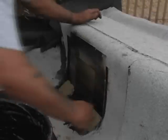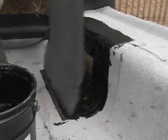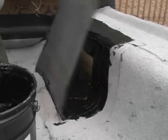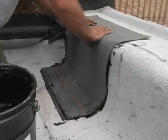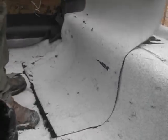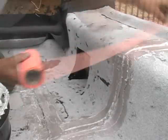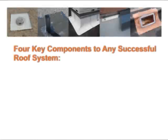Prime scupper at a rate of 100 square feet per gallon and allow to dry. Strip in flange of scupper box with base flashing ply, covering entire area with 6 inch overlap onto the field of the roof and wall flashing. Install a second layer of modified flashing ply in bitumen over the base, 9 inches onto the field of the roof. Apply a 3-course application of mastic and mesh at all seams.